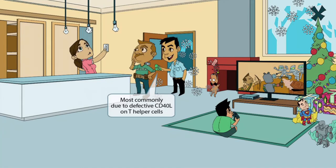Now let's shift our attention towards the kitchen area. We've shown a woman trying to turn the lights on, but there appears to be a problem, which is why they've asked an electrician helper guy to come check out the problem. The electrician helper guy will be our symbol for T helper cells. Notice that the husband is trying to pay this guy two $20 bills — together this equals 40, and should make you think of CD40 ligand. So this, along with the helper guy, should help you remember that this disorder is most commonly due to defective CD40 ligand on T helper cells.